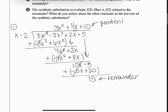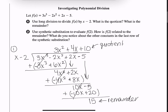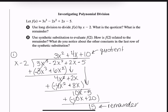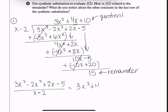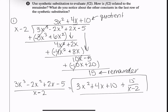When I divide 3x³ − 2x² + 2x − 5 by x − 2, I get the quotient 3x² + 4x + 10 plus my remainder 15 over the divisor x − 2. You can write it in that mixed form, similar to how we did with numbers.